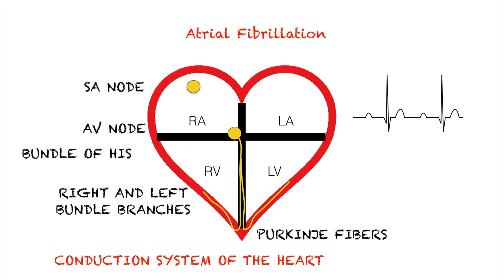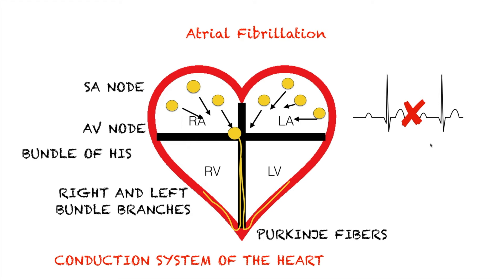Things are different when it comes to atrial fibrillation, or AFib. Instead of just the SA node conducting the first impulse towards the AV node, you have several cardiac cells within the atria — found in both left and right atria. Together with the SA node, they simultaneously conduct their own impulse, and when they do, they actually cause both atria to contract much faster than normal, causing both atria to fibrillate or quiver.